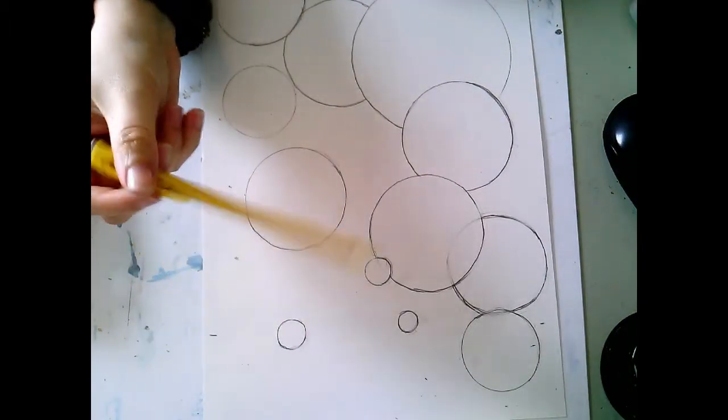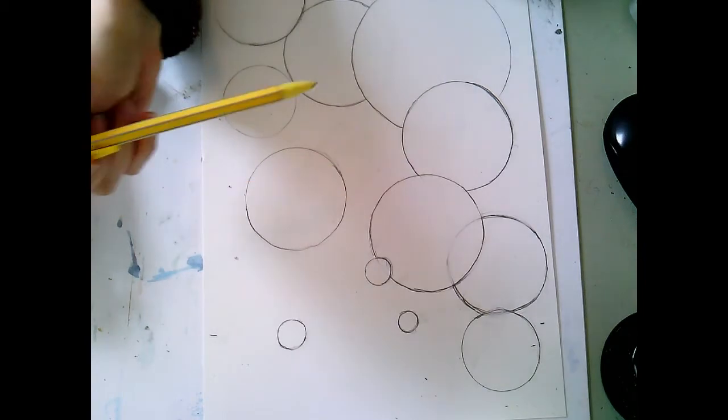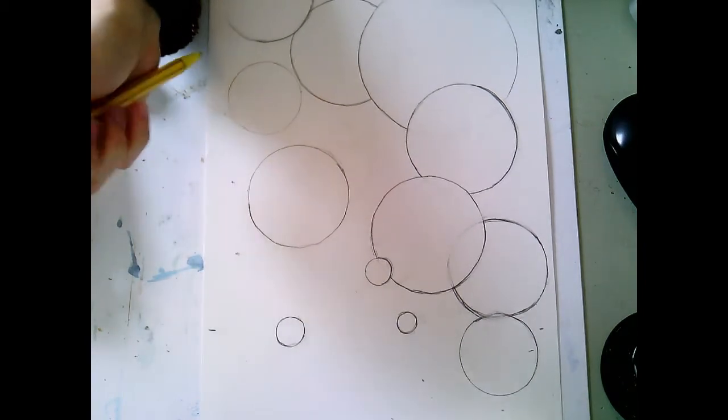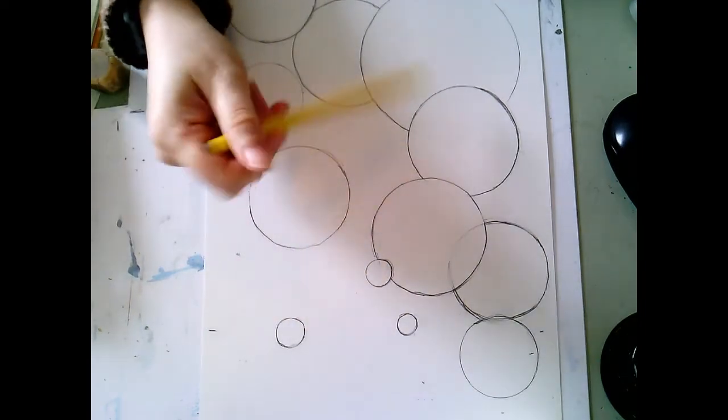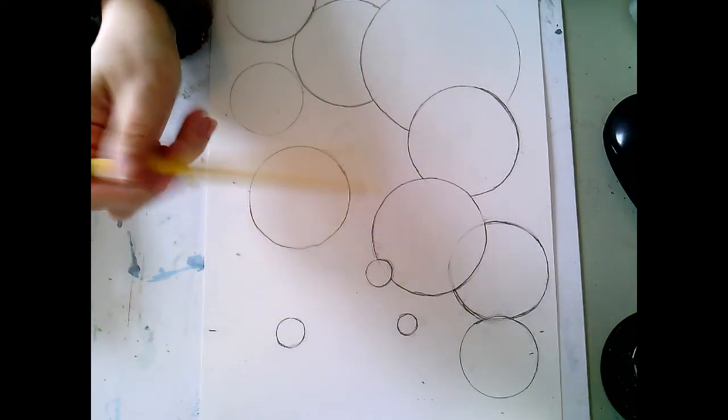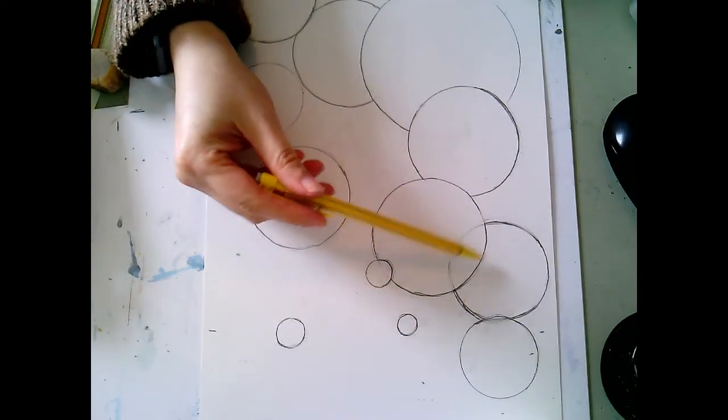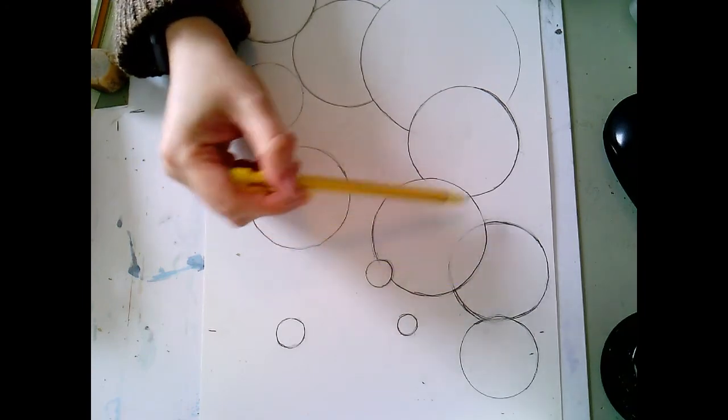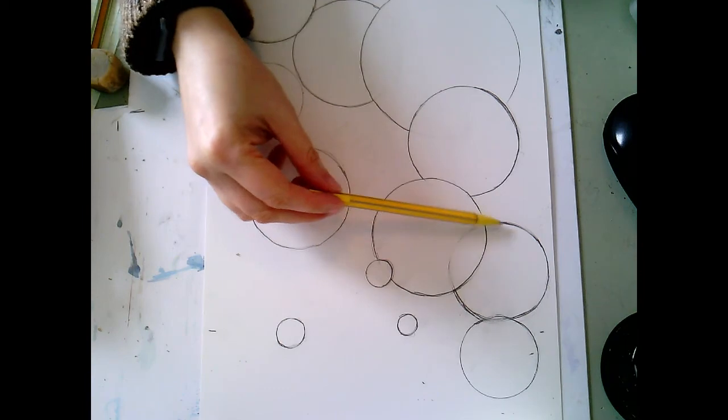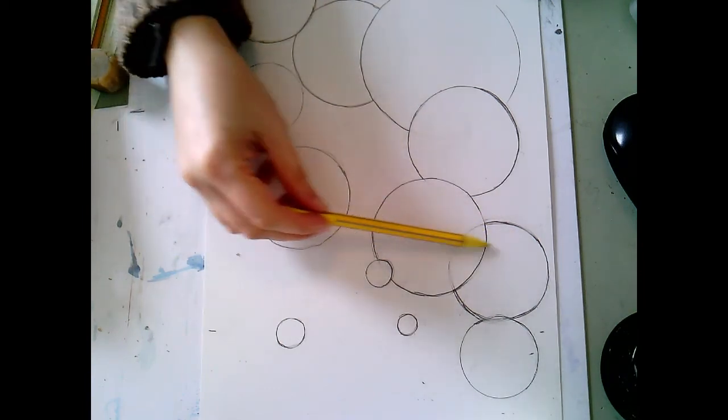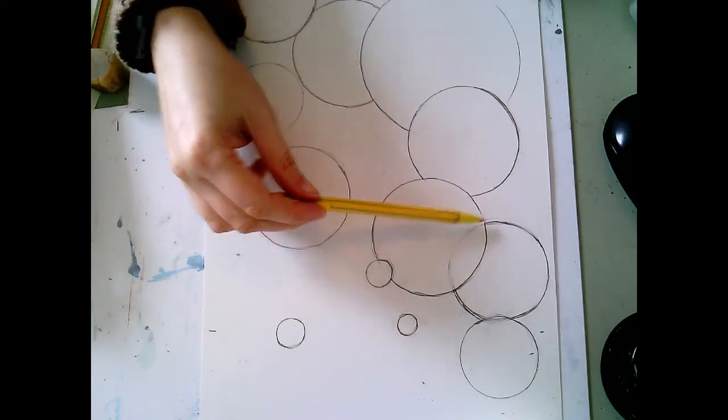Alright, so I went through and just darkened up a couple of outlines. I'm not going to darken up all of them because I don't know how dark I'll actually make the textures in each one of these little balls, but I darkened up the ones where there was overlap and I've done some erasing just so that it would be easier to see which one is actually in front and which one's actually supposed to be in back.